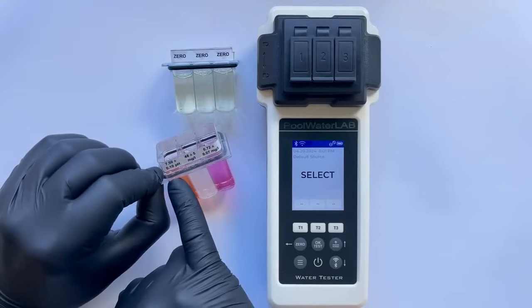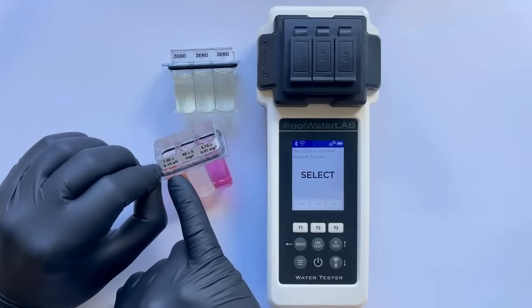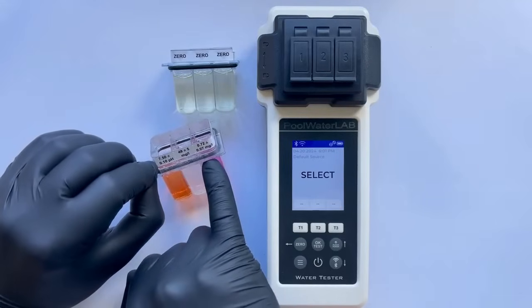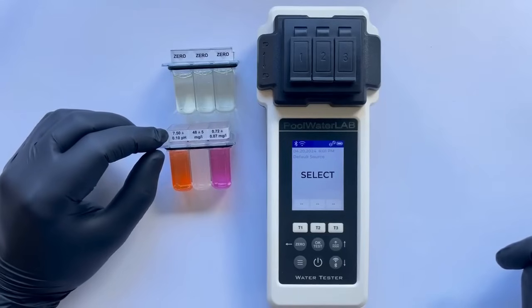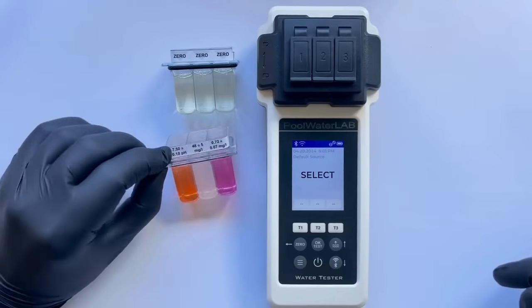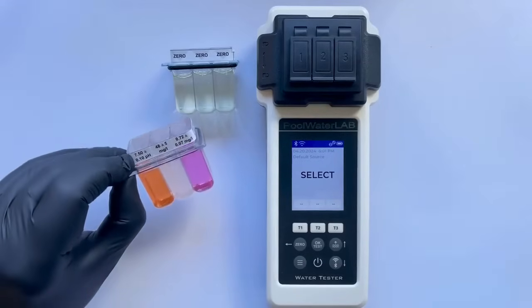In the laboratory, these indicators, pH, CYA, and free chlorine levels, have already been pre-tested, and the results are visible on the cuvette for clear and easy verification. This ensures that their baseline values are accurately established before we use them for further comparative testing.